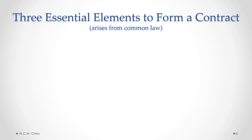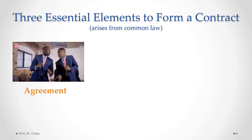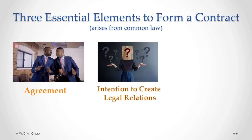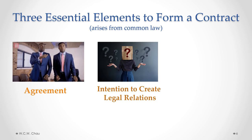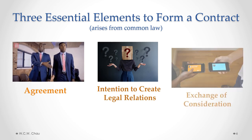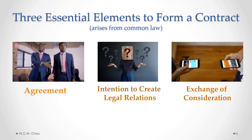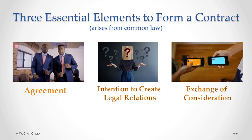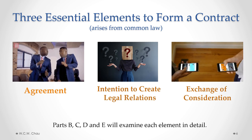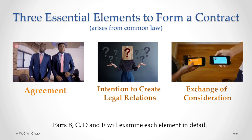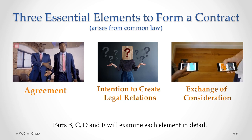Based on common law, there are three essential elements to form a contract. The first element is having an agreement. The second is an intention to create legal relations. And the third essential element is an exchange of consideration between the parties. The next videos in this series will examine each of these three elements in detail.